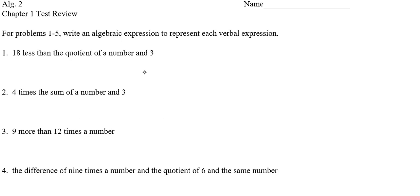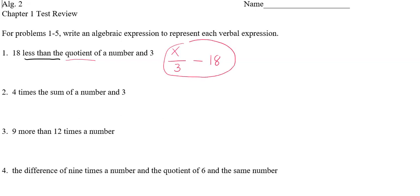Whenever you see the phrase 'less than' in number one, that's referring to subtraction. The word 'quotient' is division. Always think of the phrase 'less than' or its counterpart 'more than' as being appended at the end of the expression. The quotient of a number and three is just division of some number by 3. So x divided by 3, and then 18 less than that would be subtracting 18 from that fraction. That's my answer for number one.